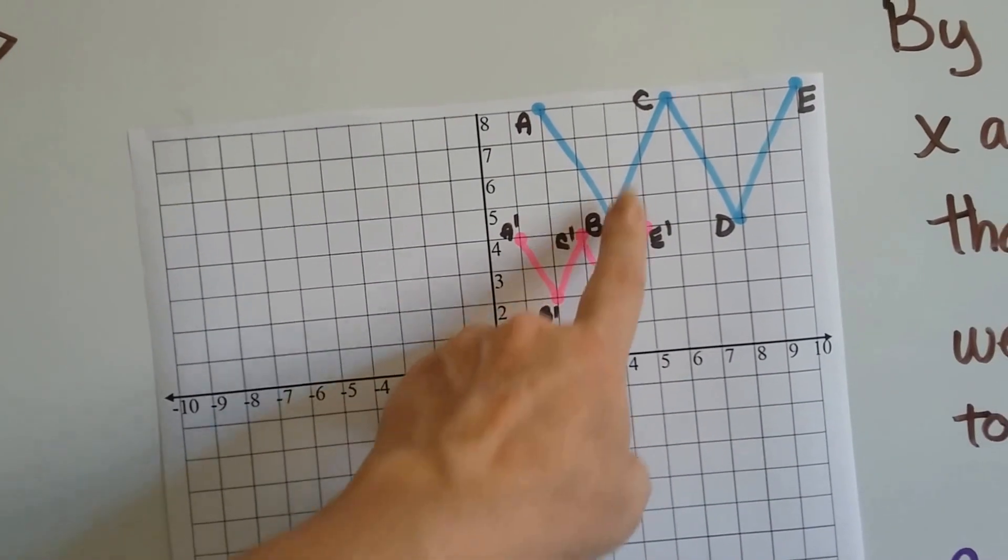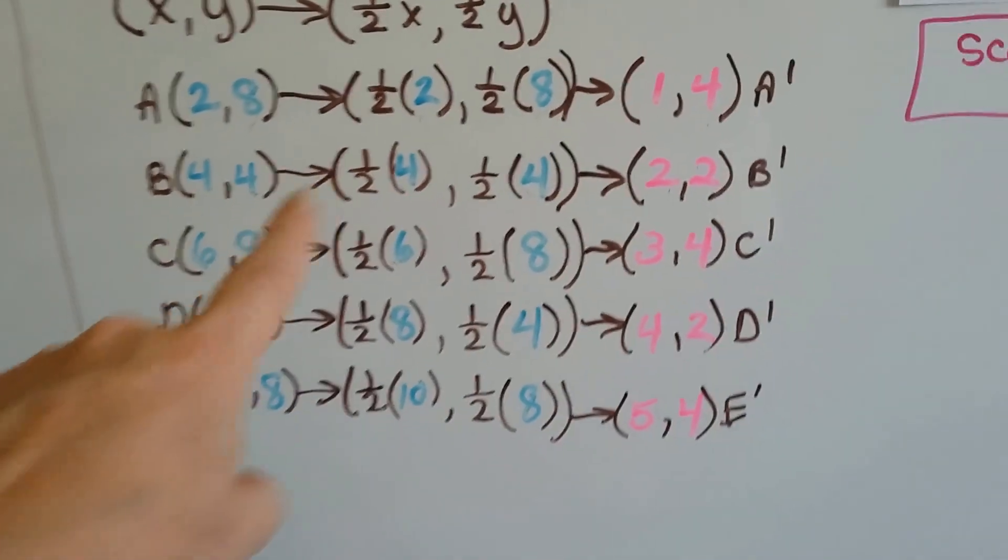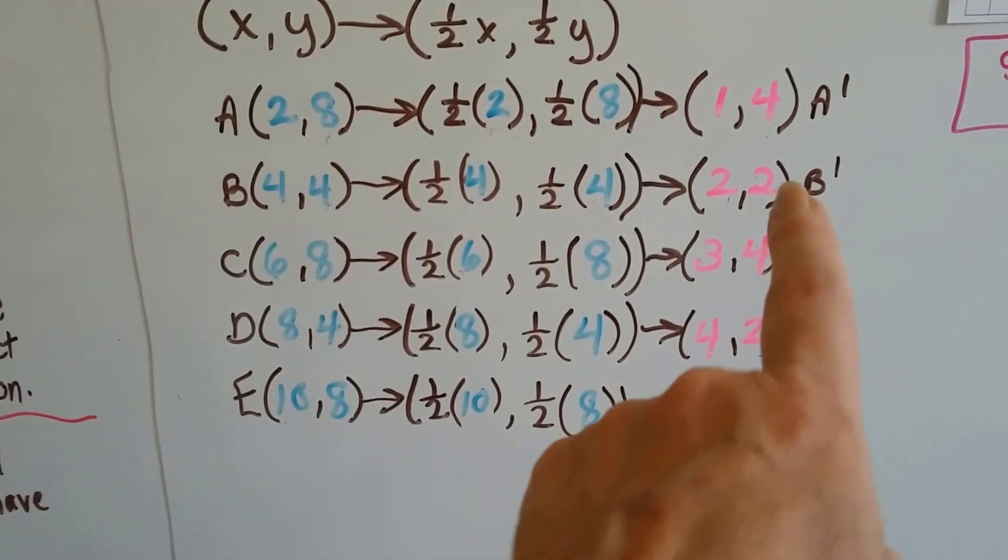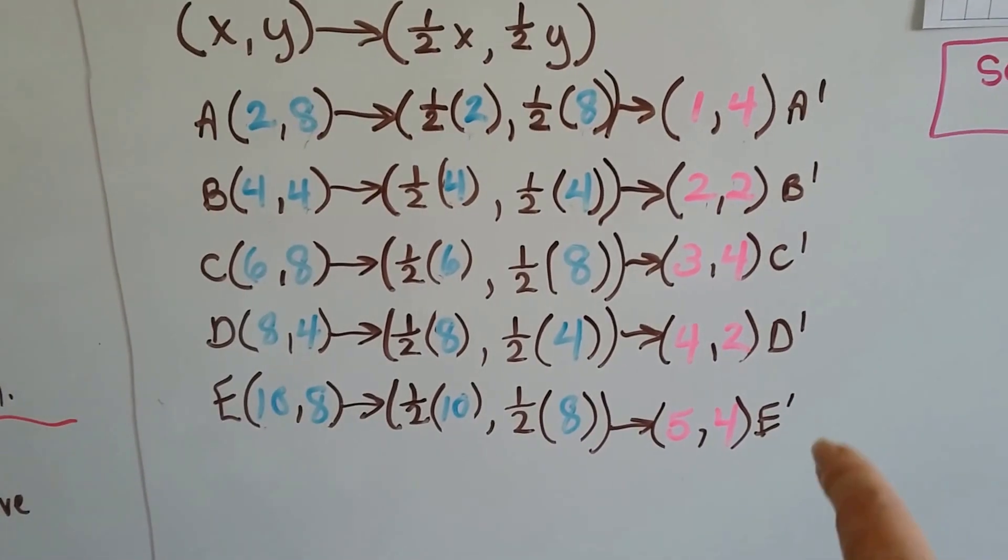We do the exact same things for B, C, D, E. We multiply each one of them by a half. We get our coordinates for B prime, C prime, D prime, and E prime.